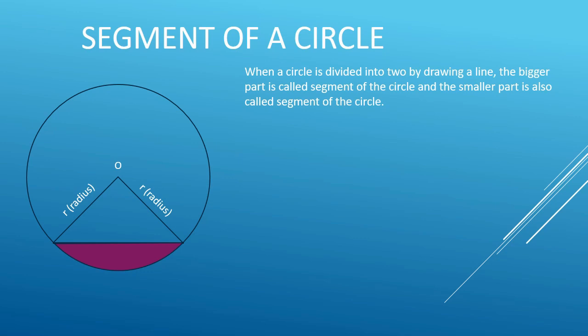Consider a triangle inside a circle. You can see a sector of the circle. The area of the smaller segment equals the area of the sector minus the area of the triangle. This pink portion represents the area of the smaller segment.